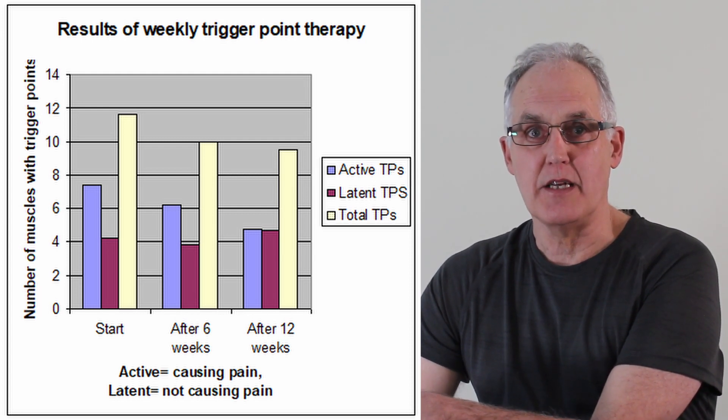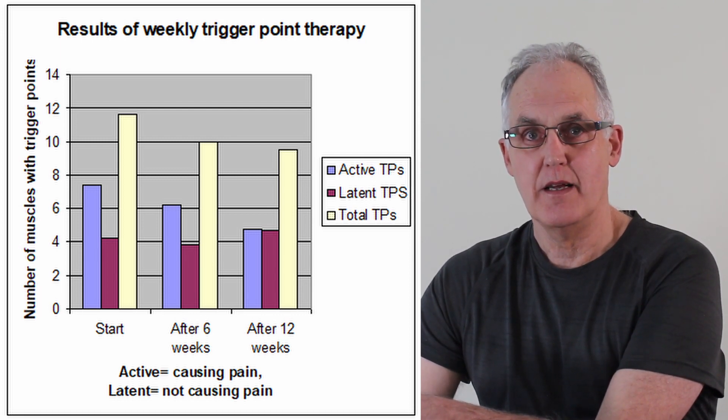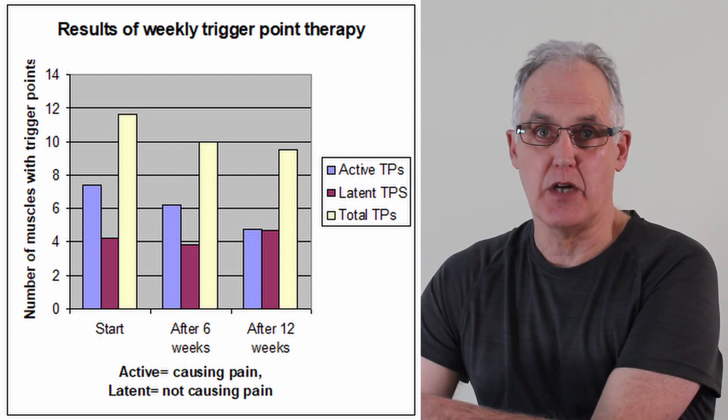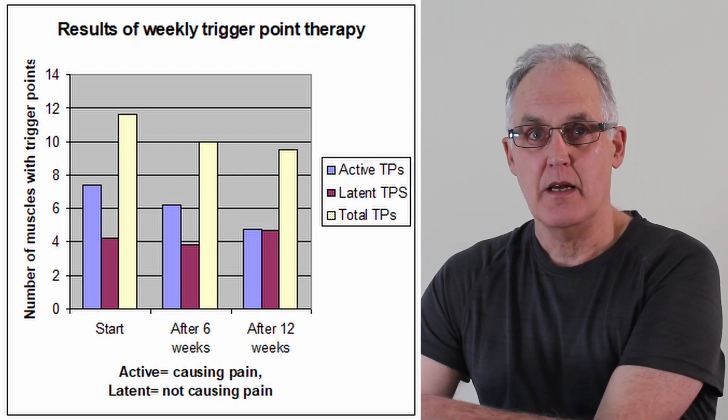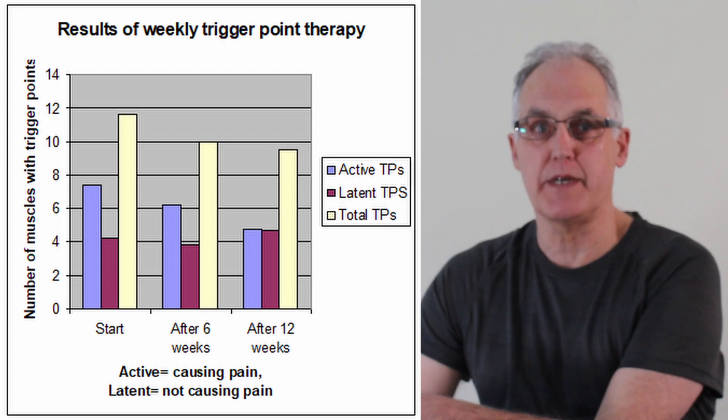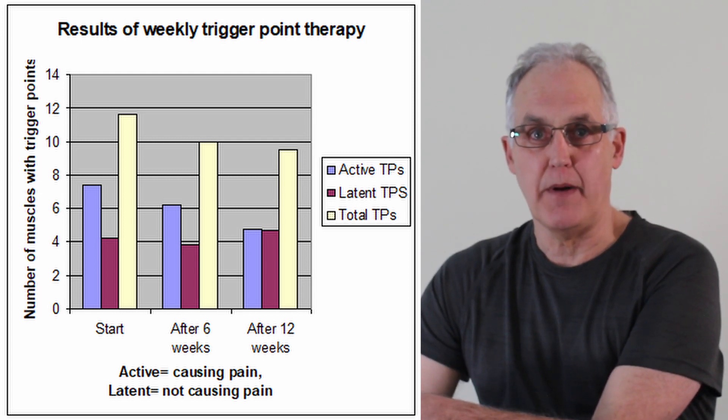On this chart you see the number of trigger points at the start, after six weeks, and after 12 weeks. The blue is the trigger points that cause pain, purple is the trigger points that only shoot pain when you're pressing them, and the yellow is the total. You can see that after 12 weeks of therapy the total number of trigger points has gone down a bit, but there are actually more of the trigger points that only shoot pain when you're pressing them.